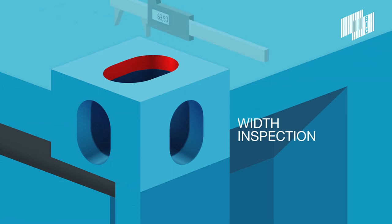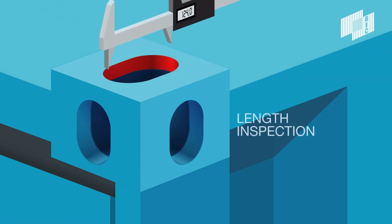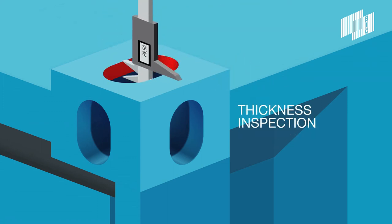All three dimensions should be checked: width inspection, length inspection, thickness inspection. A set of simple go-no-go testing devices can be built to allow for quick testing of apertures.